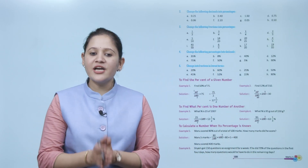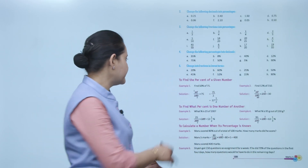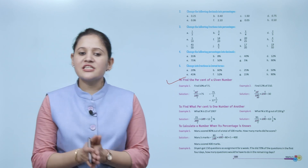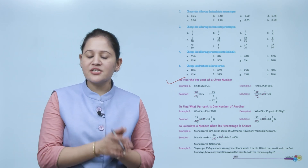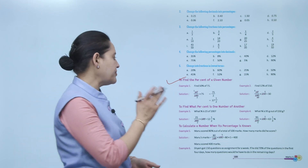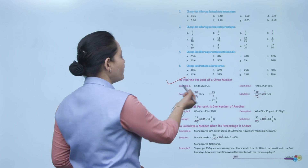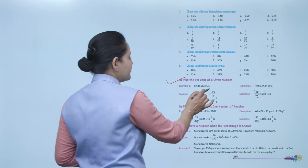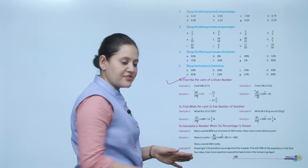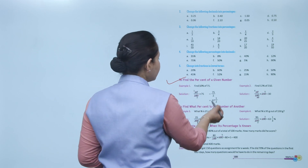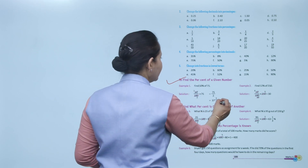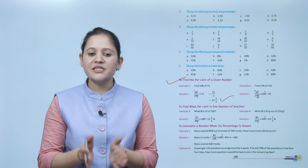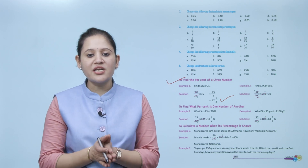Next is finding the percentage of a given number. For example, find 50% of 75. 50% of 75 = 50/100 × 75 = 75/2, which as a mixed fraction is 37½.